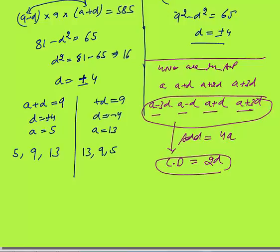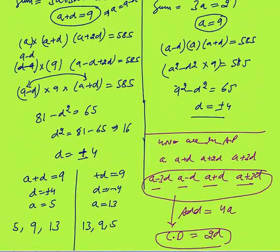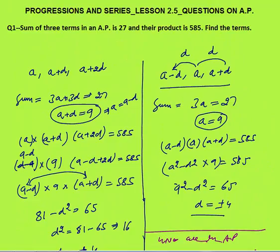Similarly for five numbers in AP, you can take them as a−2d, a−d, a, a+d, a+2d. The advantage is that when the sum is given as constant, the d terms cancel and the sum becomes 5a. This approach lets you solve questions in a much faster manner.